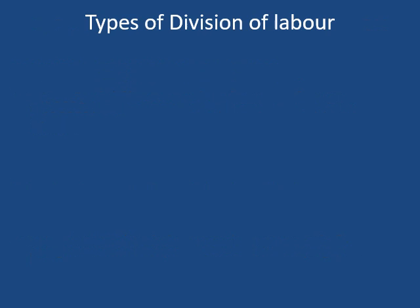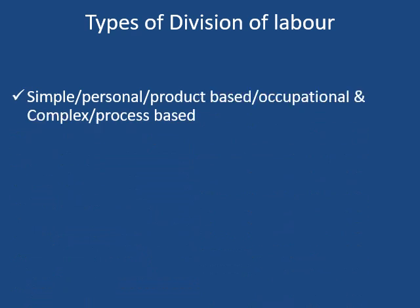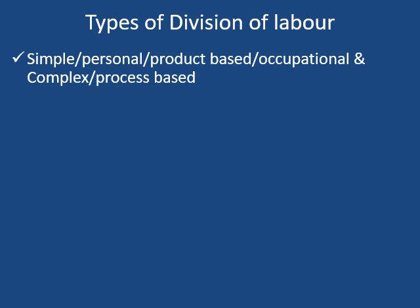We are going to study the types of division of labor. There are various kinds of division of labor. The first one is the product-based division of labor, which is also known as simple, personal, or occupational division of labor. We will also talk about process-based division of labor, which is also known as complex division of labor.